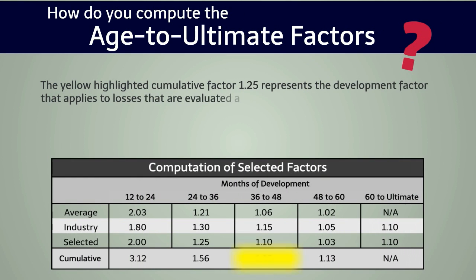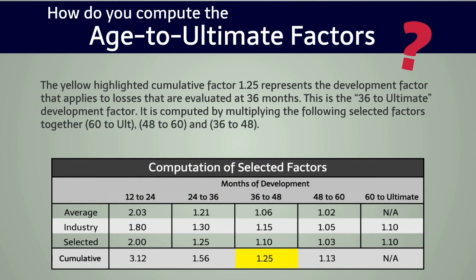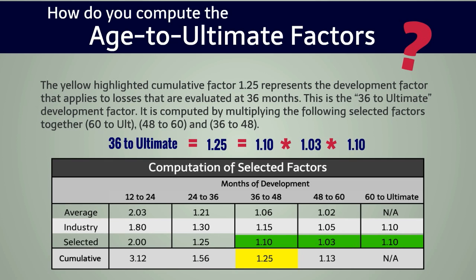The yellow highlighted cumulative factor of 1.25 represents the development factor that applies to losses evaluated at 36 months. This is the 36 to ultimate development factor. It is computed by multiplying the following selected factors together: the 60 to ultimate factor times the 48 to 60 factor times the 36 to 48 factor. So the 36 to ultimate factor equals 1.25, which is computed as 1.1 (the 36 to 48 factor) times 1.03 (the 48 to 60 factor) times 1.1 (the 60 to ultimate factor).